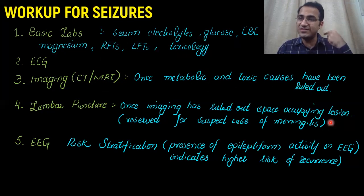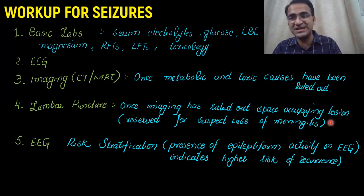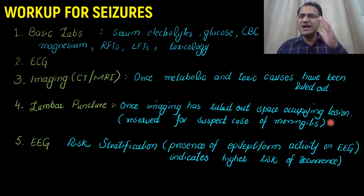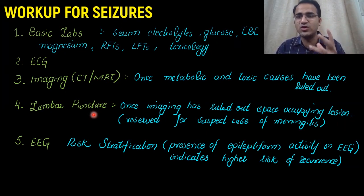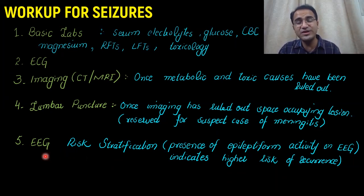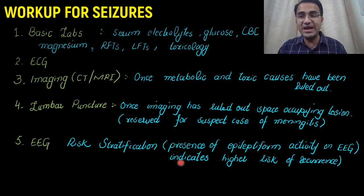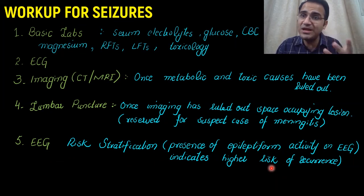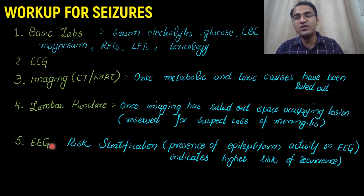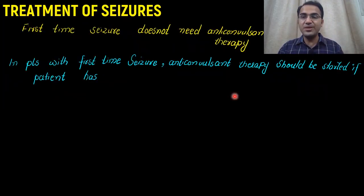After CT or MRI has ruled out any space-occupying lesion, if you suspect meningitis or CNS infection presenting as seizures, only then should you go for lumbar puncture. In LP, look for signs of infection such as lymphocytosis or neutrophilia. EEG helps with risk stratification — any abnormal epileptiform change on EEG indicates that patient is more prone to recurrent seizures.